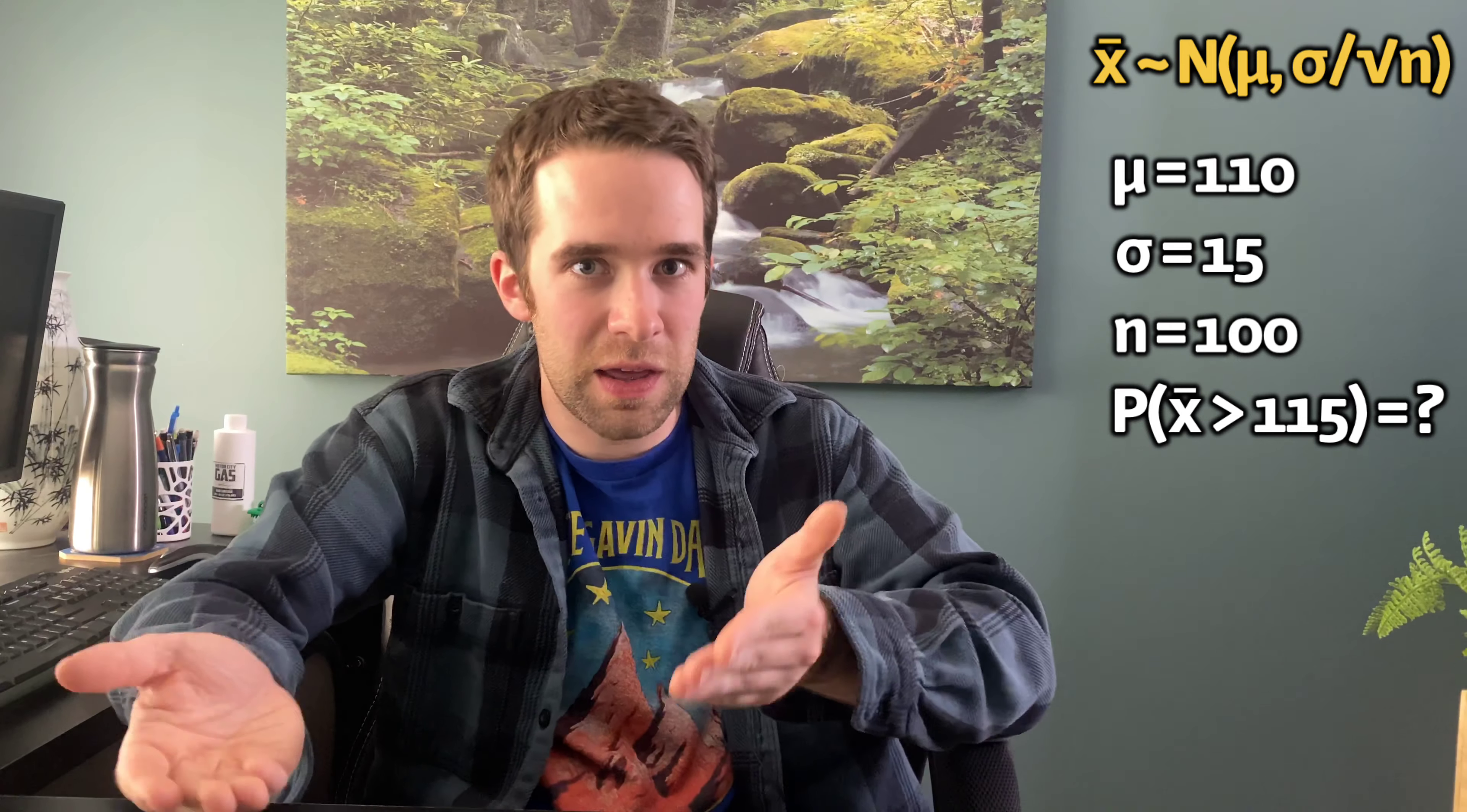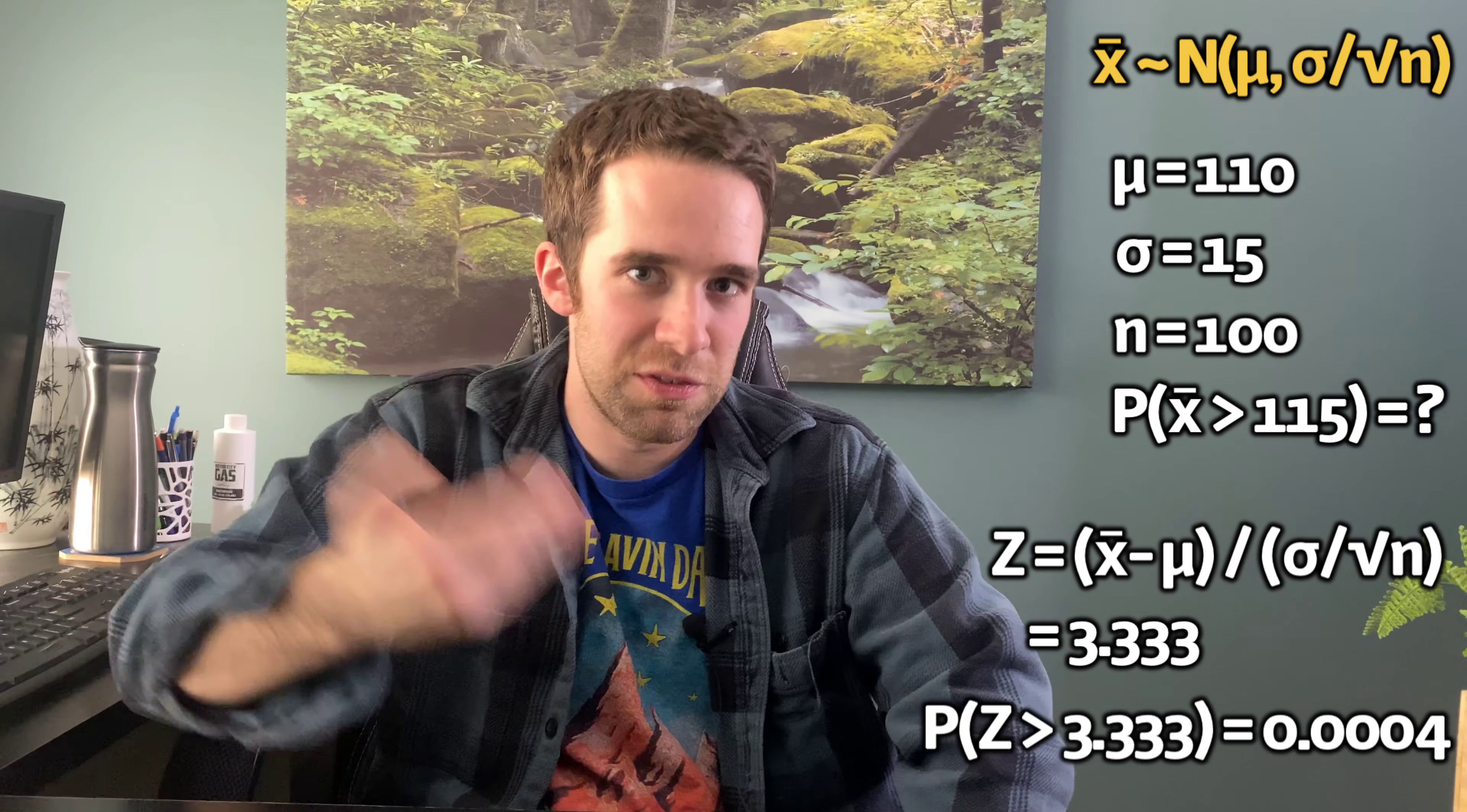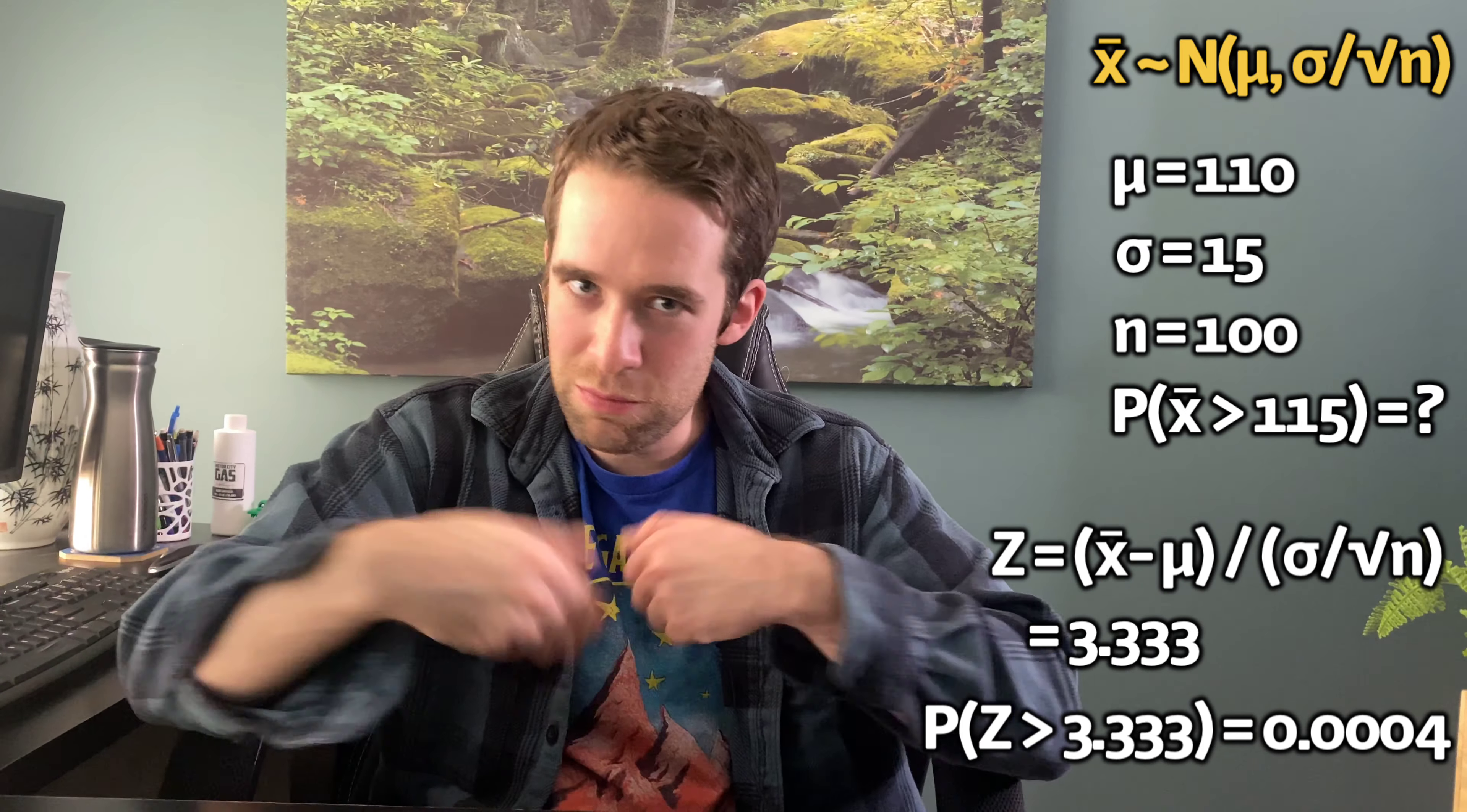This turns into a probability calculation with the normal distribution where you just calculate a Z-score like you always do. Solve for Z, and you get Z equals 3.333. Then you just do a standard probability calculation, you find the area to the right of Z equals 3.333 is 0.0004.